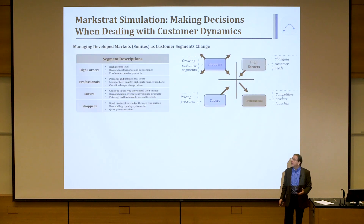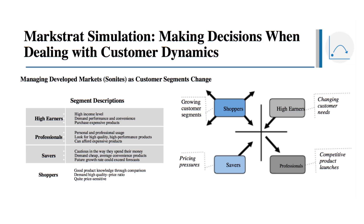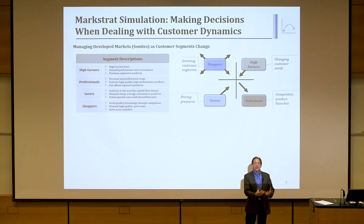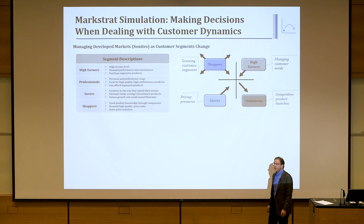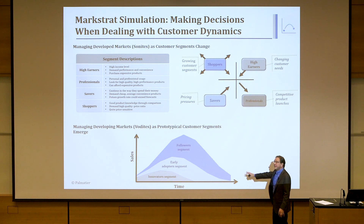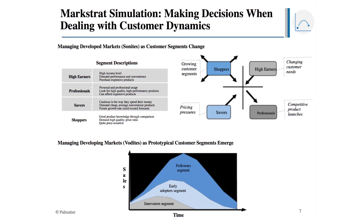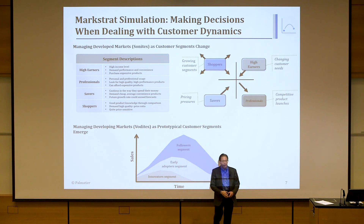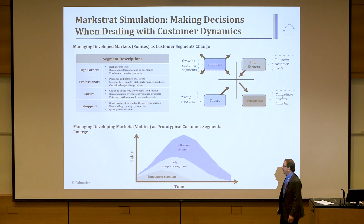If you're using Markstrat, it has a number of different segments that change over time — some are growing, some are becoming more price sensitive, others have more competitors or changing needs. In that simulation, you have to constantly revise your positioning to match your target segment; if you don't, your product will be left behind. Markstrat also has a brand new emerging market product line where people start buying as innovators and early adopters, and ultimately the mainstream market begins. Markstrat does deal with customer dynamics — the second principle.